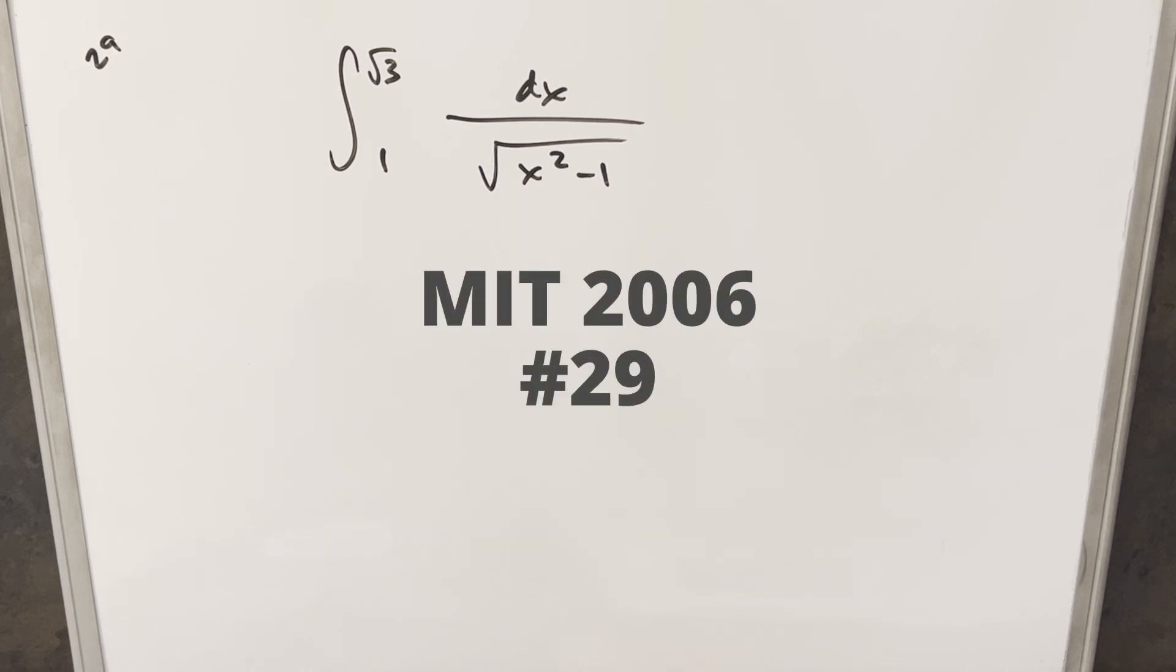Okay, we have another interesting integral from the MIT integration. It should be 2006. This is number 29. We have the integral from 1 to square root of 3, 1 over square root of x squared minus 1 dx.